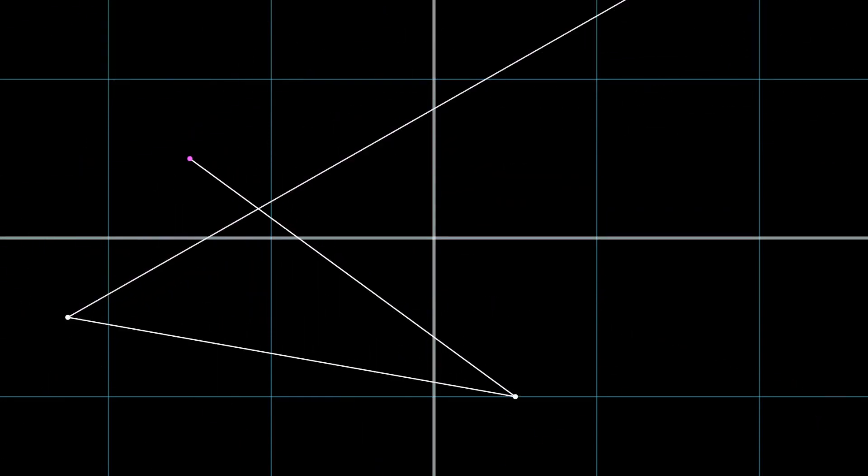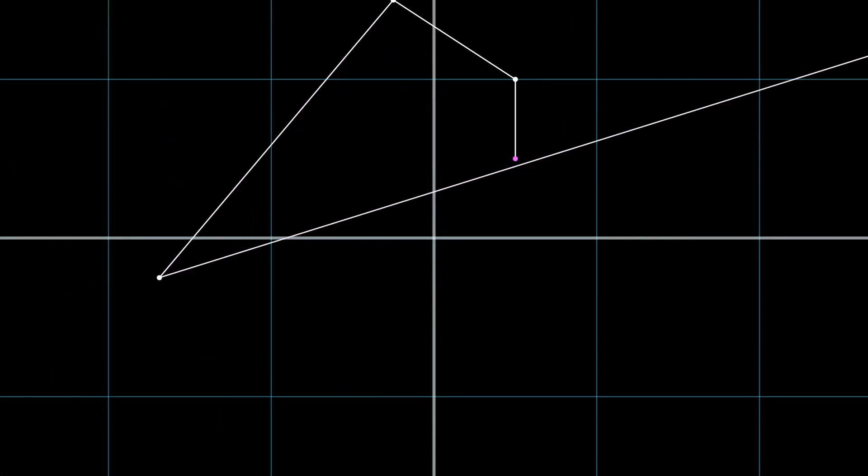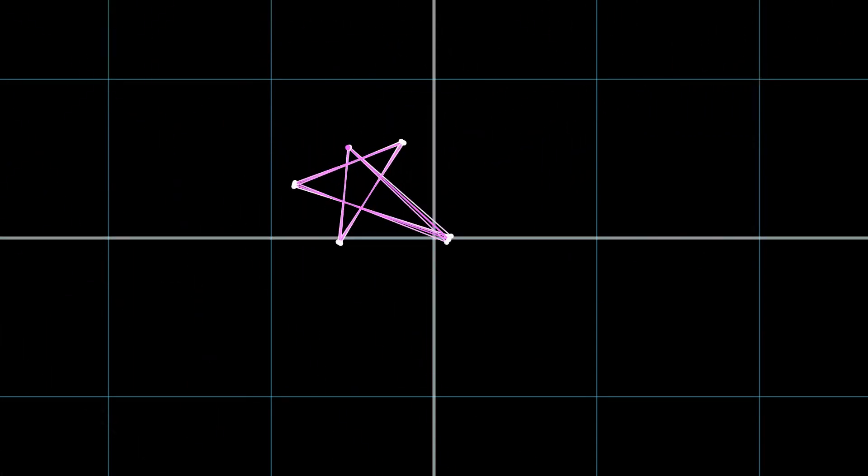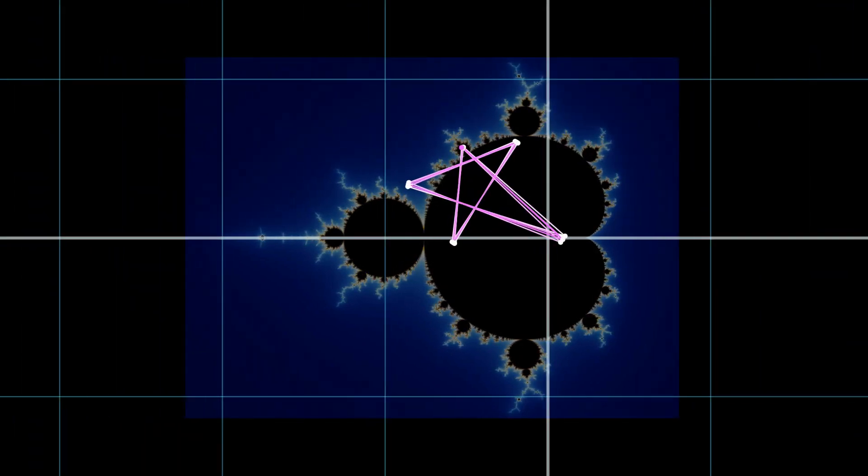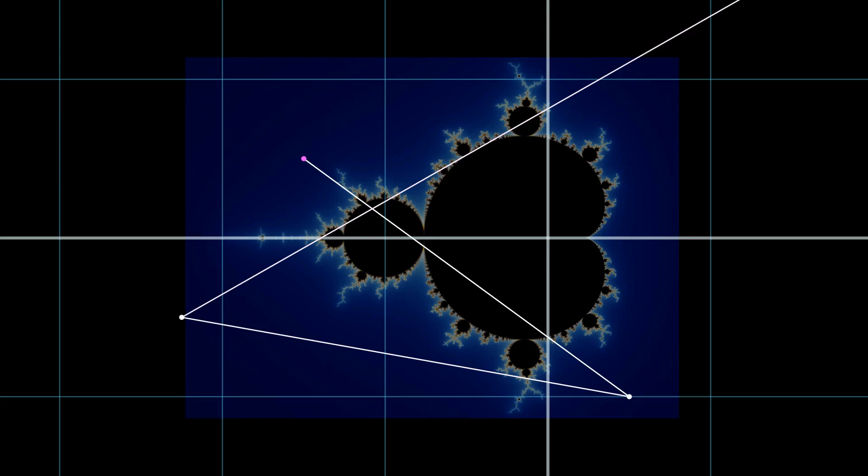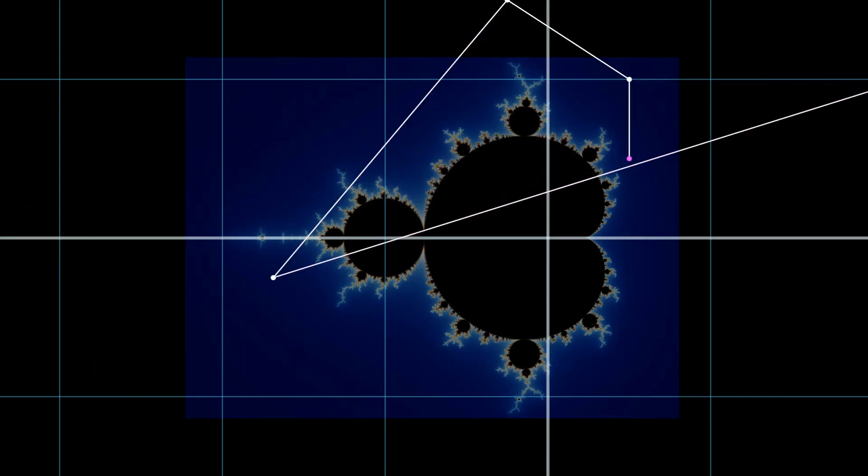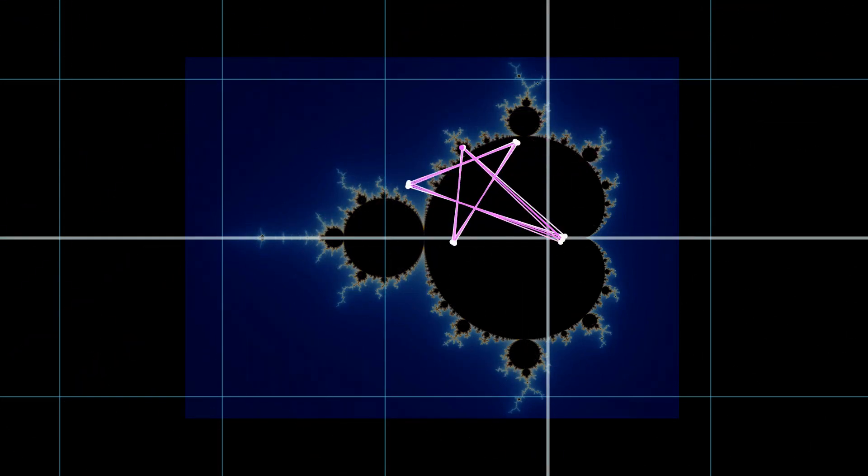Notice how some initial points are bounded, and some points shoot off into infinity. By the criteria of the Mandelbrot set, initial points outside the set diverge to infinity, while the initial points in the set are bounded.